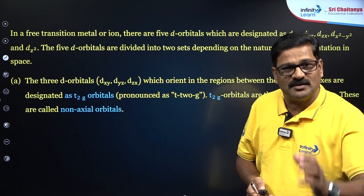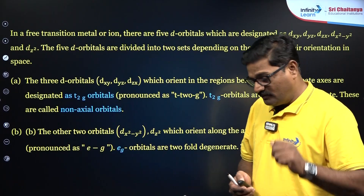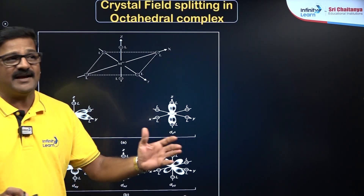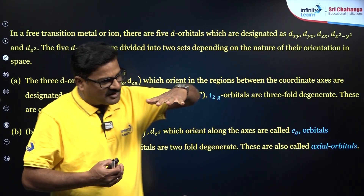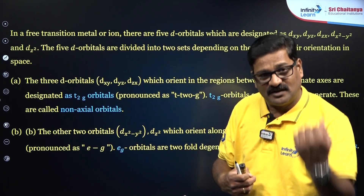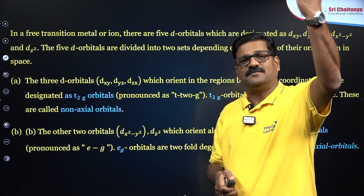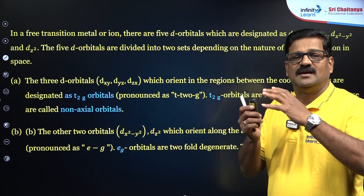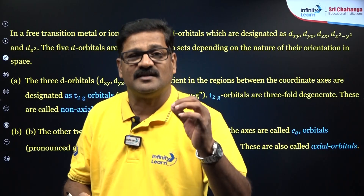The dxy, dyz, and dzx orbitals are said to be non-axial orbitals, whereas the dx²-y² and dz² orbitals are said to be axial orbitals. When the ligand approaches and the degeneracy is lost, a set of low energy orbitals called t2g and a set of high energy orbitals called eg are formed. This splitting of degeneracy in the presence of a ligand is called crystal field splitting.